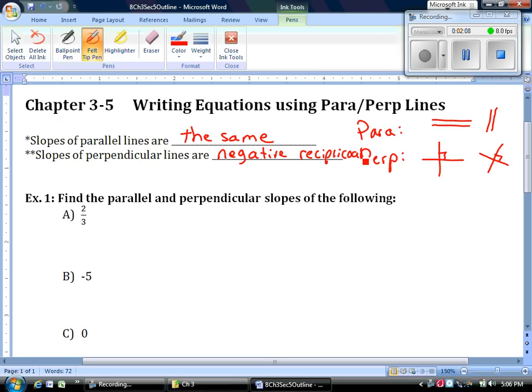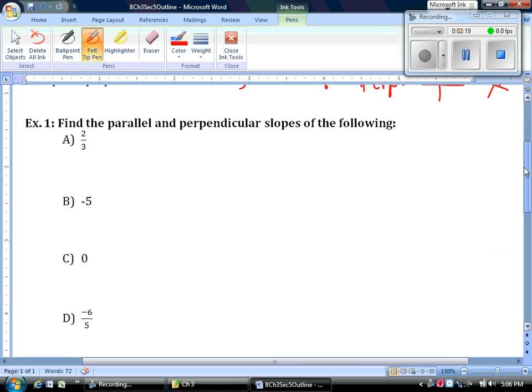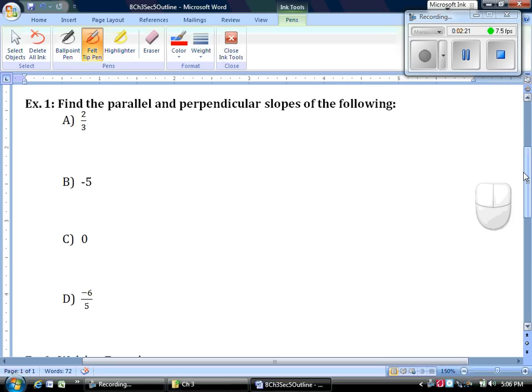All that means is you're going to take the number, flip it, so the bottom goes to the top, the top goes to the bottom, and make it positive to negative or negative to positive. Let's take a look at a couple of slopes and determine it parallel and perpendicular.